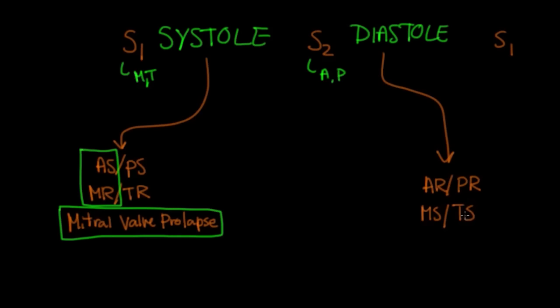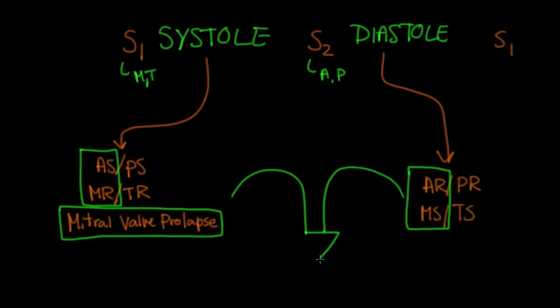Remember, the only way I'm arriving at these names and when these murmurs occur is based on which valves should be open or which valves should be closed during systole and diastole. The ones we're really going to discuss are aortic regurgitation and mitral stenosis — the left-sided valves — because left-sided valve problems are generally much more common than right-sided. Now that we've categorized these into systolic or diastolic murmurs, two important questions are: where do you hear the murmur most loudly, and what's the shape of the murmur?